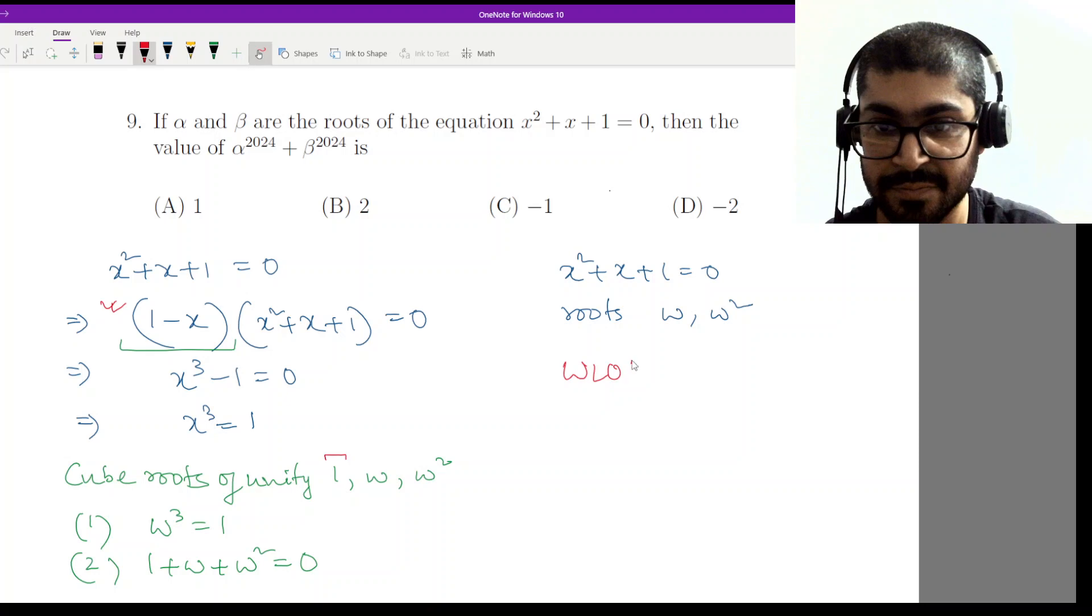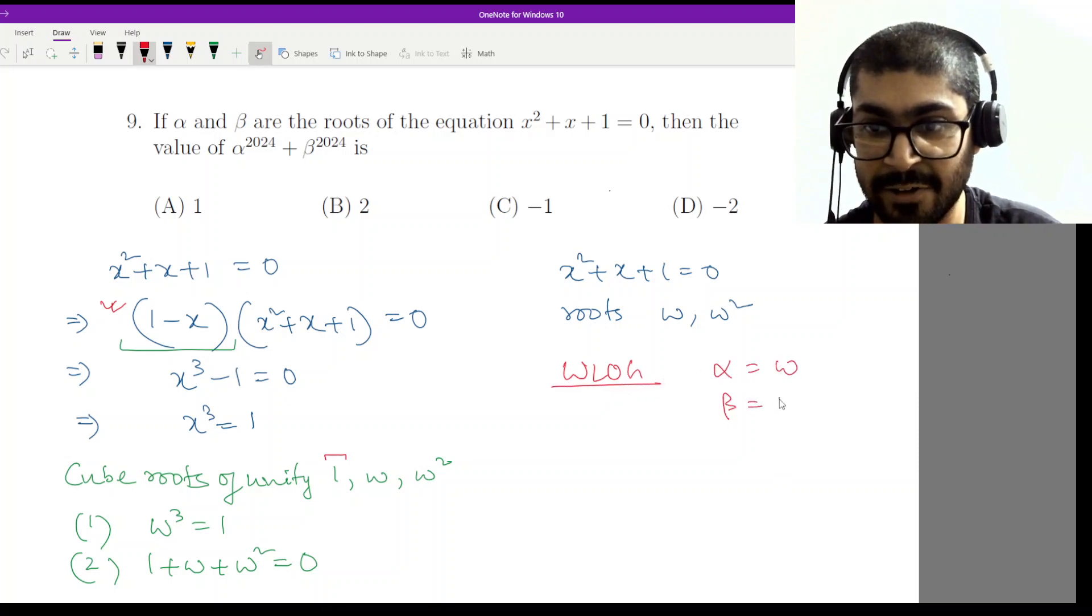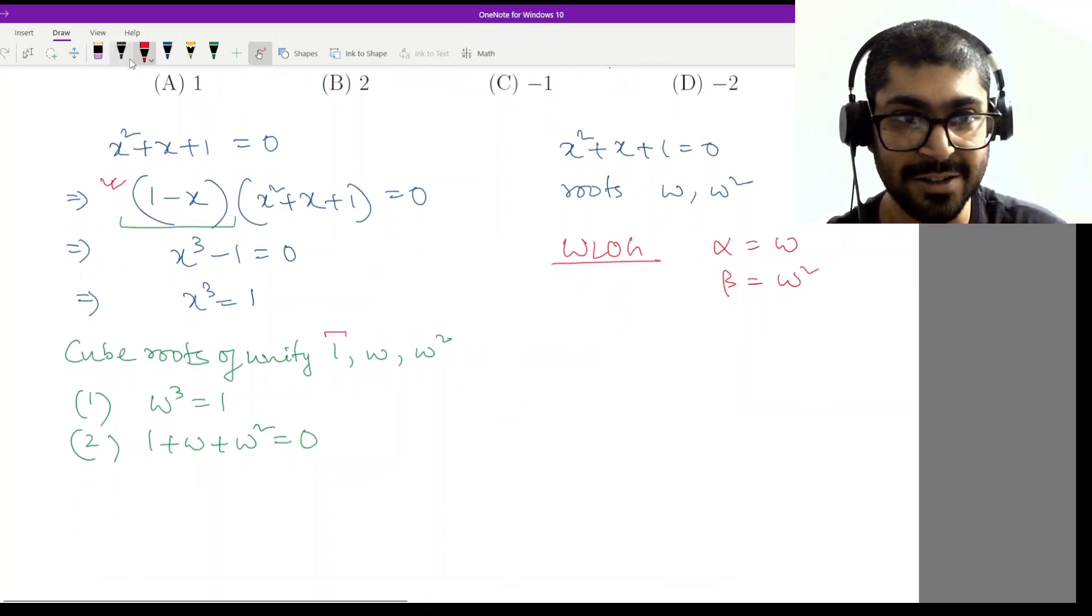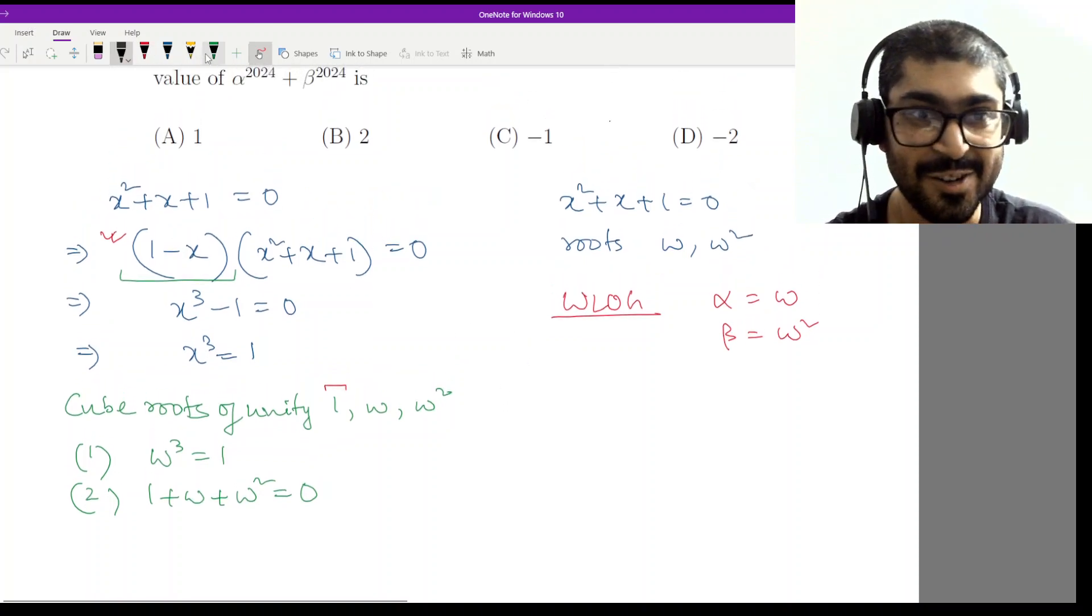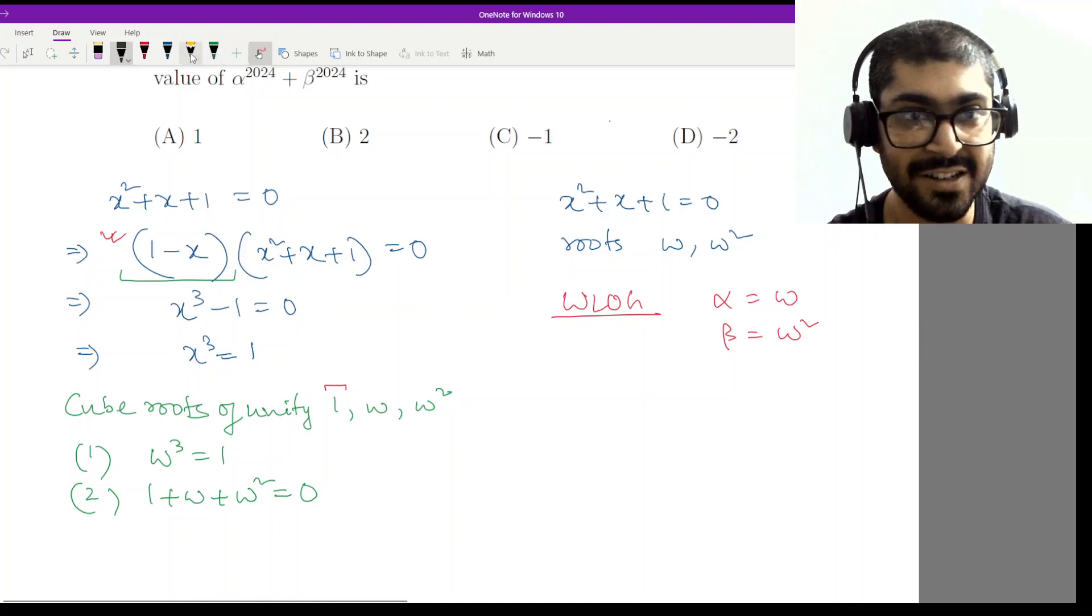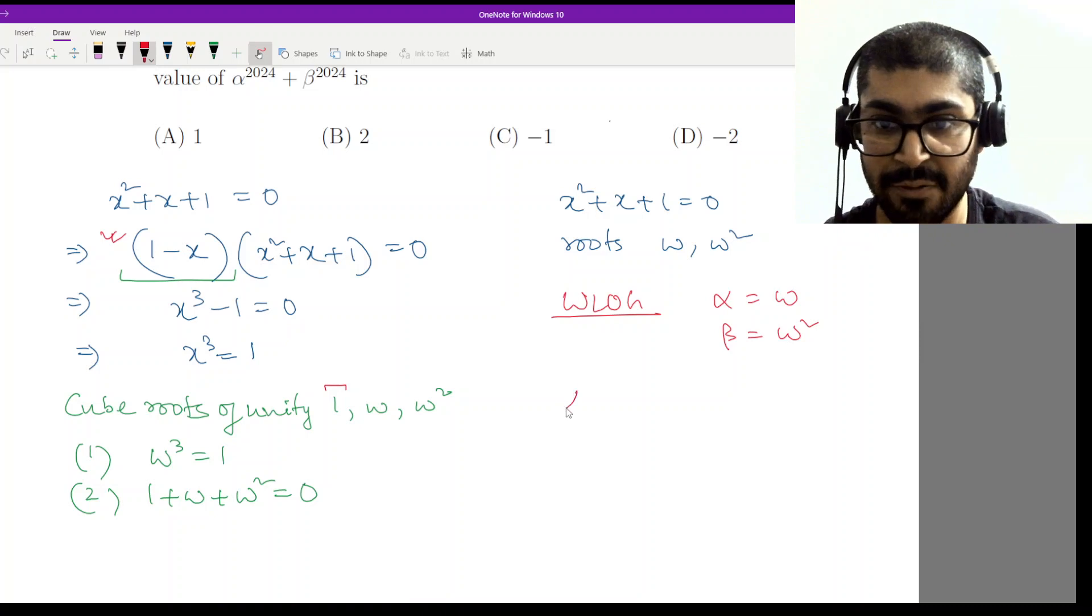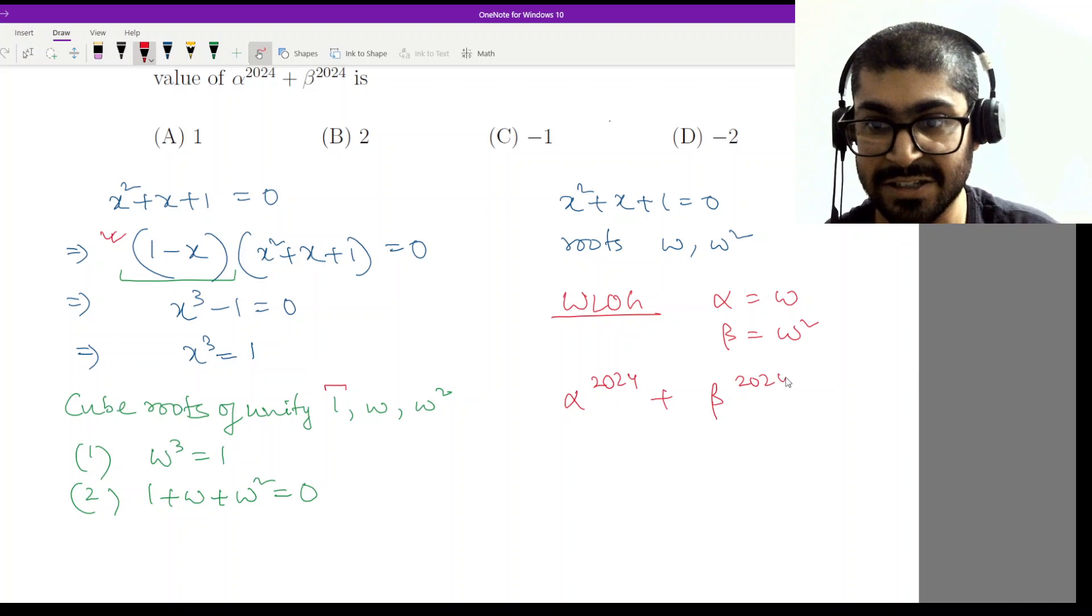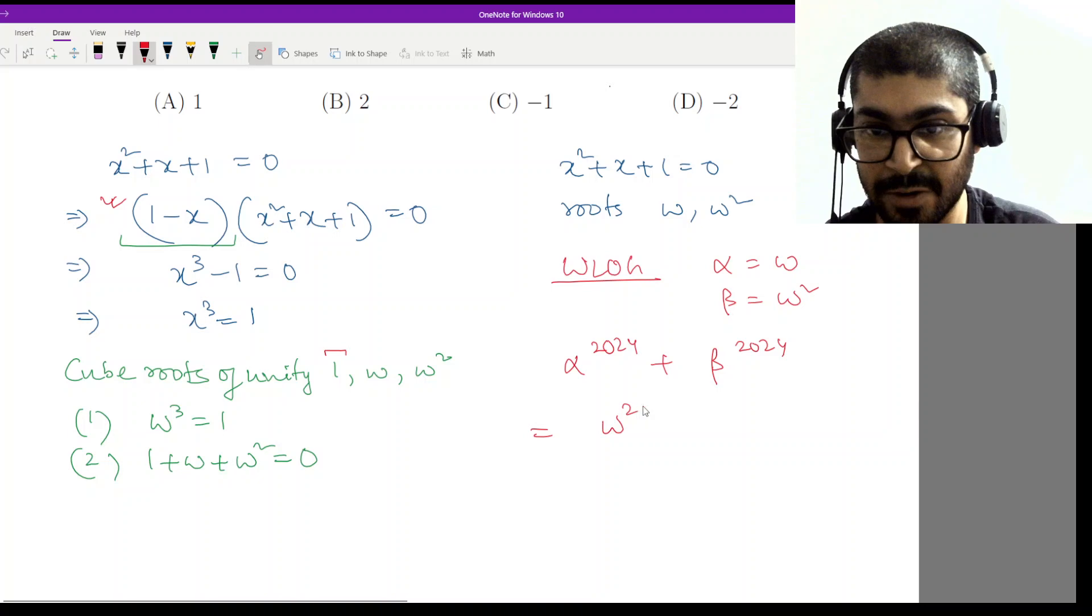Now without loss of generality, because otherwise we can just switch, we can take alpha equal to omega and beta equal to omega square. Once you have established that, the rest of the sum just becomes an application of exponents, which you have learned in class 8, I think. So how do we do this? How do we finish the sum? Half of the sum is, in fact, the heavy lifting portion of the sum is already done. Now alpha to the power 2024 plus whatever power may be, doesn't matter. These are just given because you are appearing for the exam in 2024. So this is omega to the power 2024 plus omega to the power 2048.